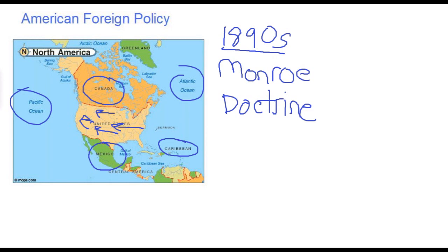One reason was economic: American businesses and business leaders were very concerned that American businesses would be cut off from expanding into countries in the Western Hemisphere if European nations gained a foothold. As a result, American economic leaders pushed political leaders very hard to increase American political interaction with nations of the Caribbean, Central and South America, and East Asia.